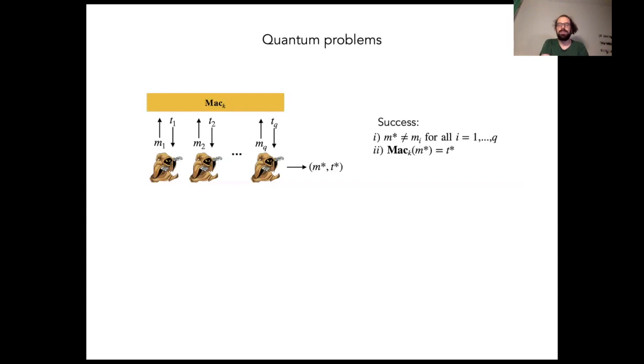Here are some additional problems that arise when generalizing UFCMA to the quantum case. First of all, there's the no-cloning principle that says that a quantum state cannot be copied. This implies that we can't even think about the straightforward generalization in the sense that we cannot compare the output of an adversary to their queries.